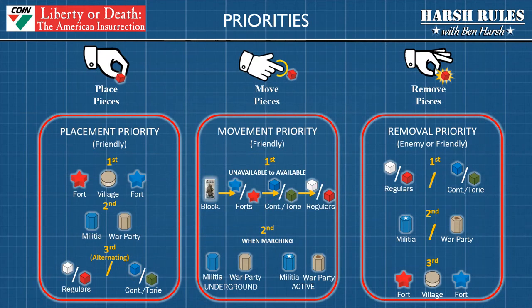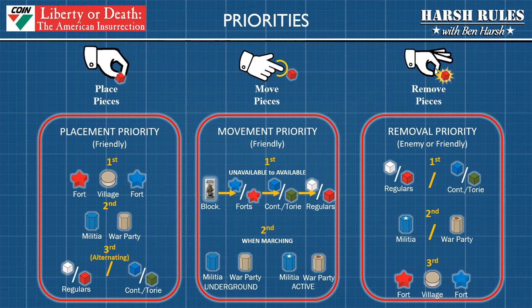Let's talk about how non-player factions prioritize placing, moving, or removing game pieces. When placing, a non-player faction will first place bases — depending on the faction, forts or villages. Next they will place guerrilla units like militia and war parties. Following that, they will alternate between placing cubes in the selected space beginning with the least amount of units, alternating between regulars and continentals or tories. For moving game pieces, non-player factions prioritize moving their units from unavailable to available whenever possible. At the game board level they will prioritize blockades, then forts, then continentals or tories, and finally regulars.